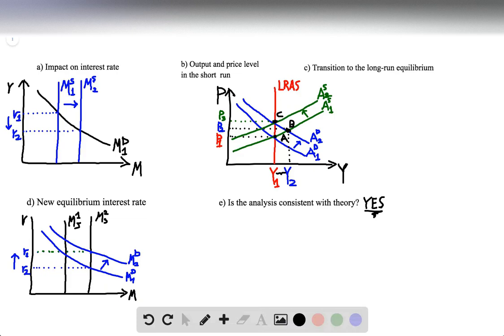And finally, part E asks, is this analysis consistent with the proposition that money has real effects in the short run, but it's neutral in the long run? So is the analysis consistent with theory? Yes. We just illustrated how this works. We showed that while output initially rises because of the increase in aggregate demand, over time it will fall once the short run aggregate supply curve adjusts accordingly.